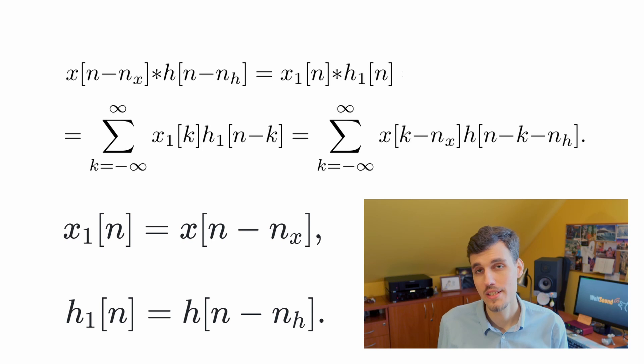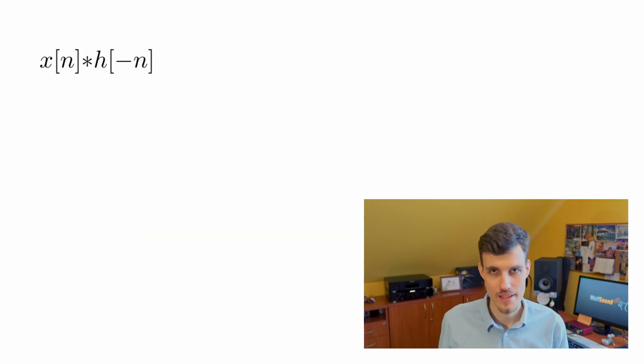I think another example will make it even more clear why these helper functions are so helpful. Let's consider that we want to again calculate a convolution between x and h but this time h is time reversed. How to go about time reversed signal?